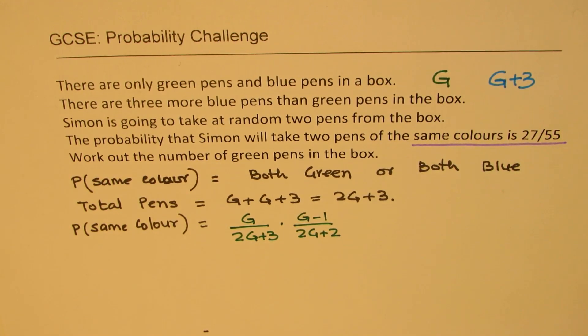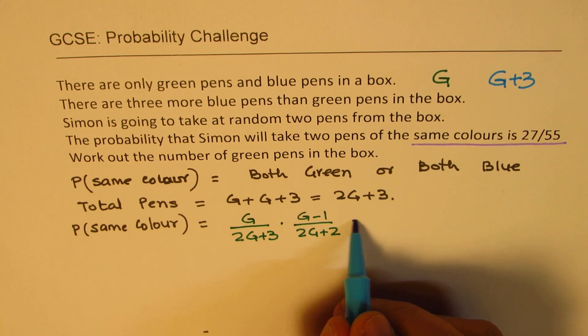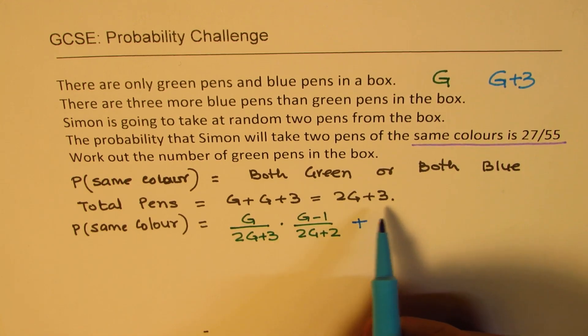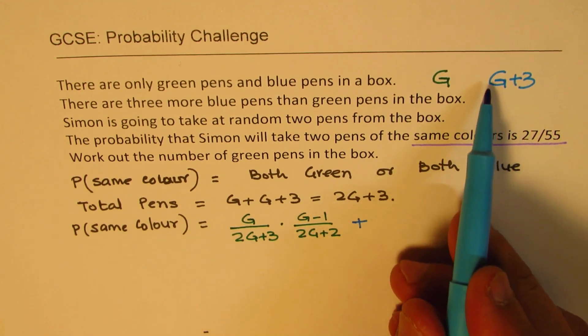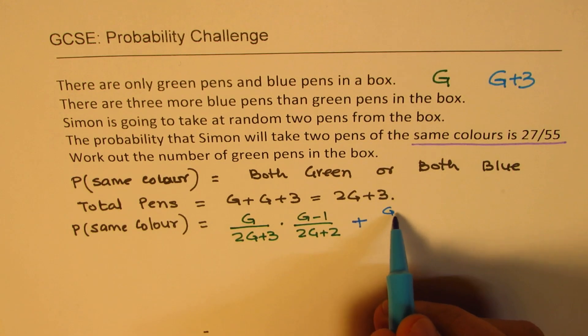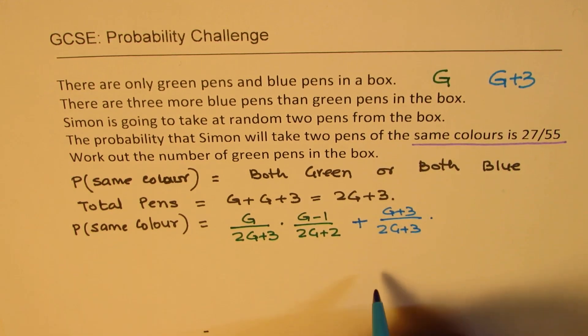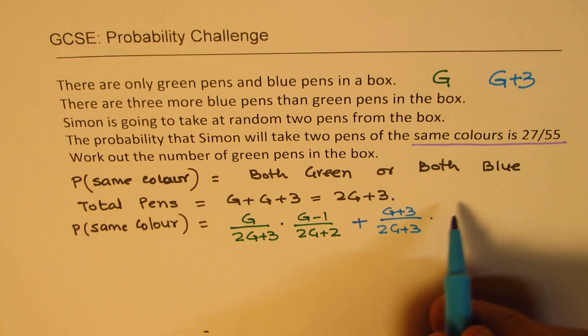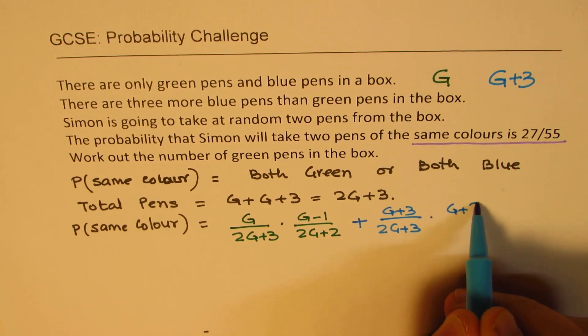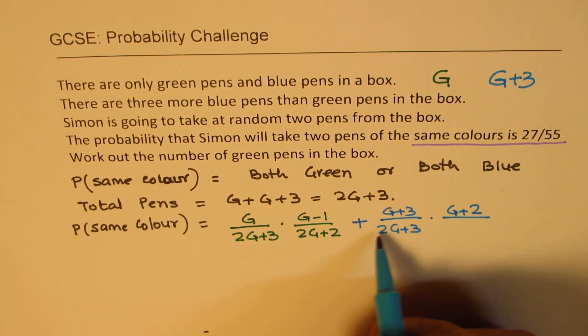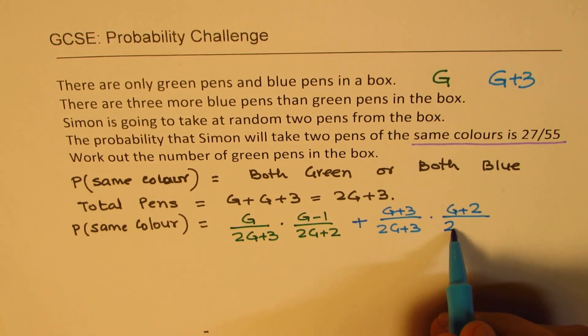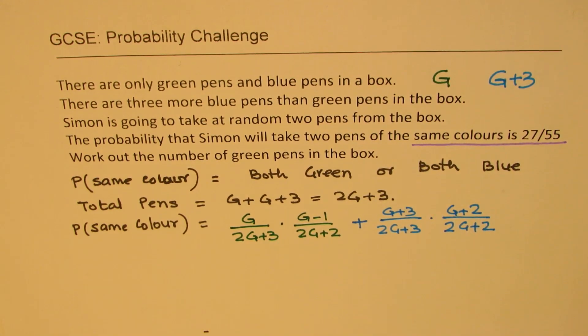Now, let's talk about blue pen. For the blue pen, if blue pen is picked first, in that case, there are G plus 3 pens. We can say G plus 3 and total is 2G plus 3. If one pen blue has been picked, one less is there. We have G plus 2 available and in the total also, one has been reduced. We have 2G plus 2. That becomes the probability.